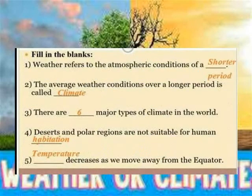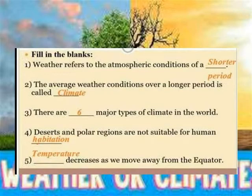With reference to the atmospheric conditions over a shorter period, that is called weather. The average weather conditions over a longer period is called climate. The major types of climate in the world are tropical, temperate, and polar. Desert and polar regions are not suitable for human habitation. Temperature decreases as we move away from the equator.